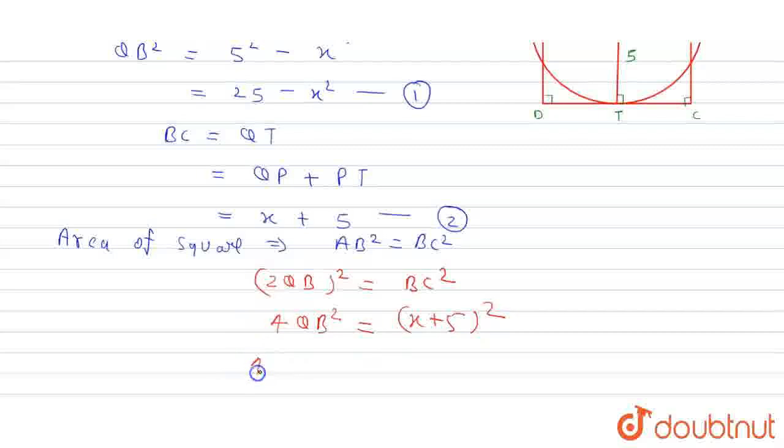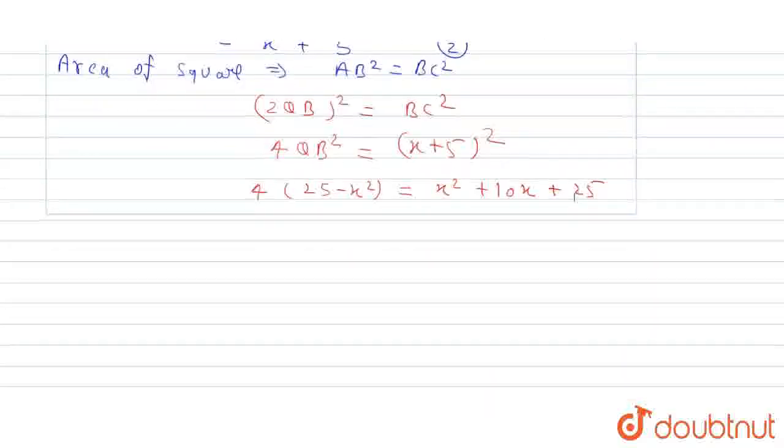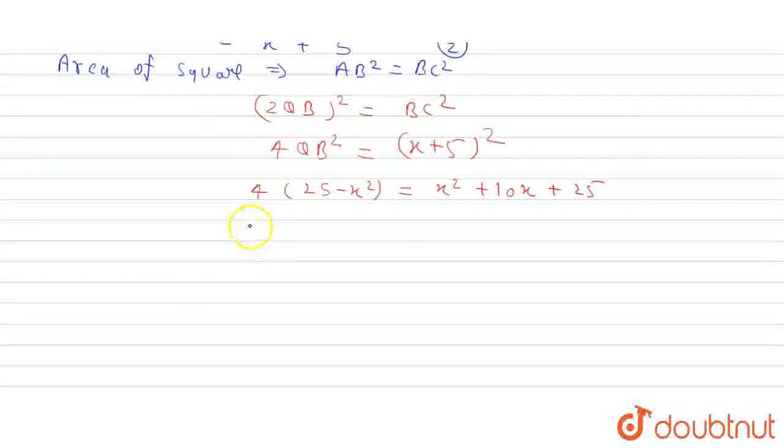We can write that 2 times QB square equals BC square. So 4 times QB², which is 4(25 - x²), equals (x + 5)². If we solve this, it comes to x² + 10x + 25. Now we will solve this equation. When we solve this, we have 100 - 4x² equals x² + 10x + 25. So we have 5x² + 10x - 75 equals 0. Dividing by 5, we get the equation.